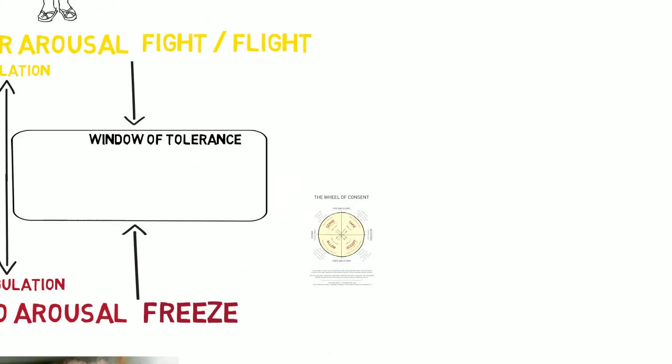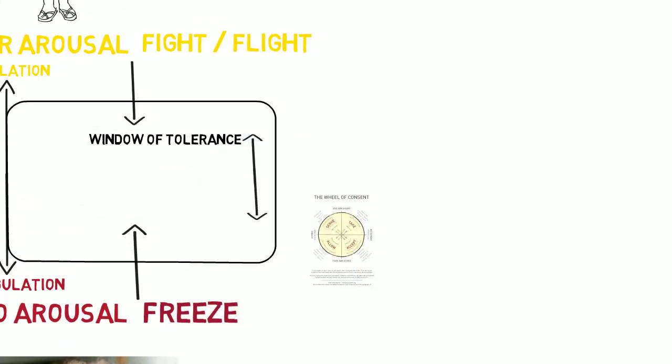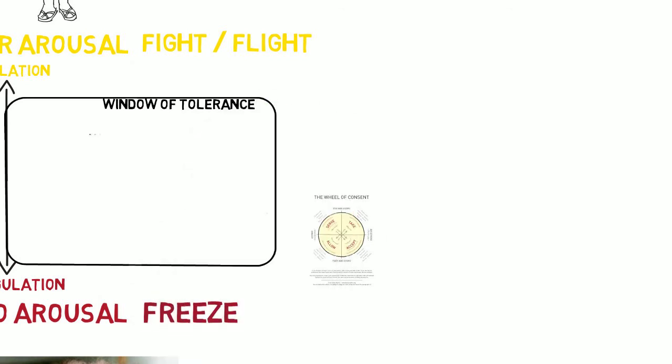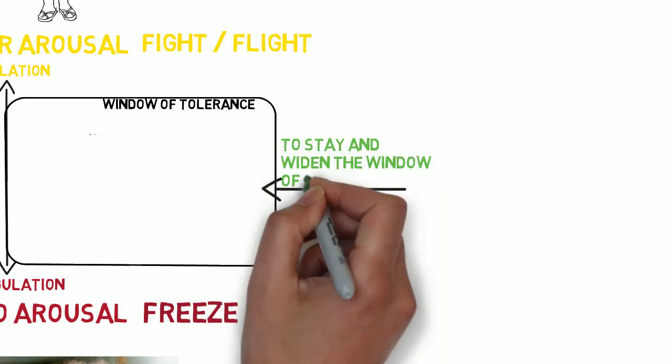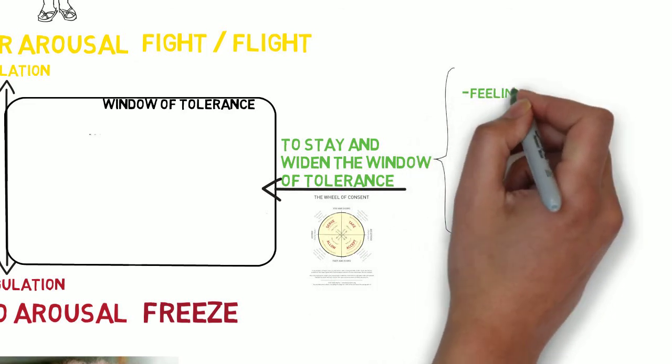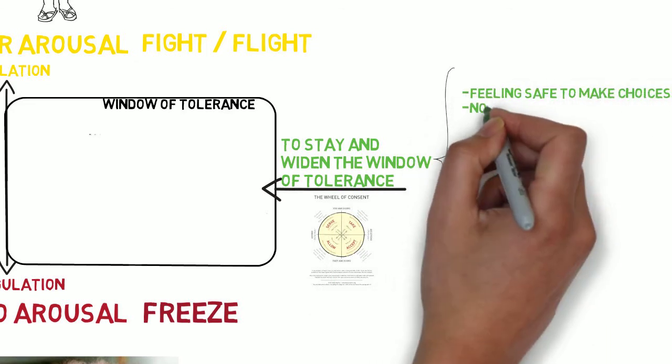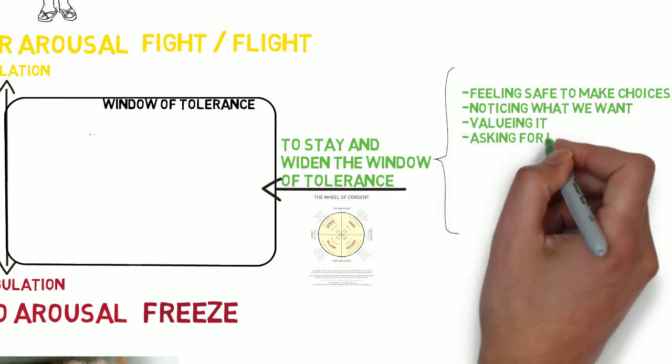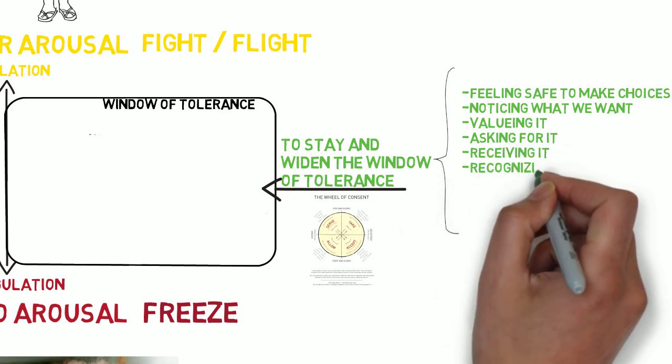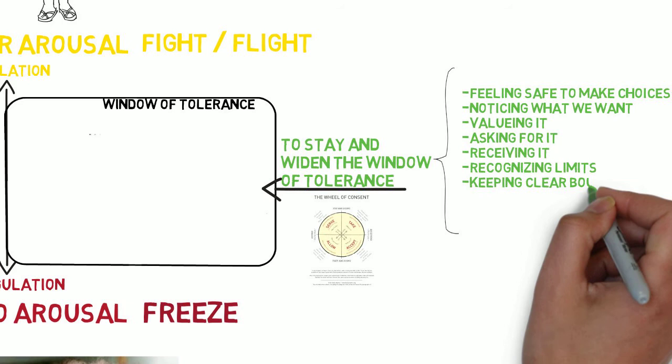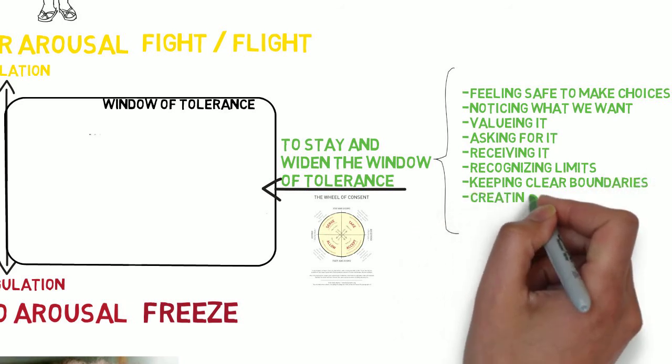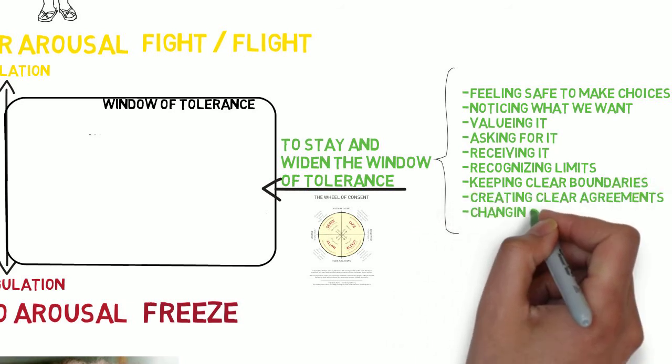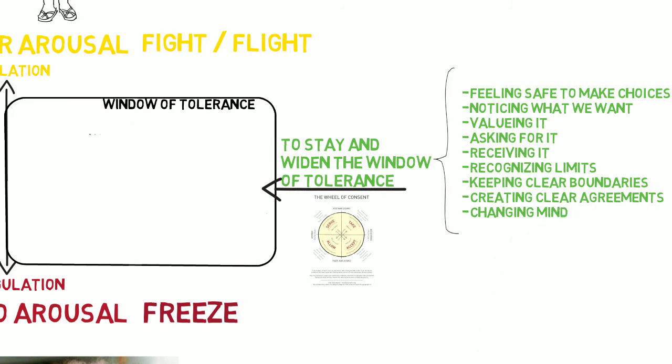Many individuals are able to widen their window of tolerance and by doing so increase their sense of calm and become able to deal with stress in more adaptive ways. To stay within the window of tolerance, we need to feel safe to make choices, noticing what we want, valuing it, asking for it and being able to receive it, recognize our limits, keeping clear boundaries by communicating yes and no, creating clear agreements based on time, space and action, and changing our mind whenever necessary.